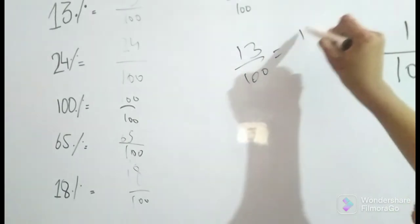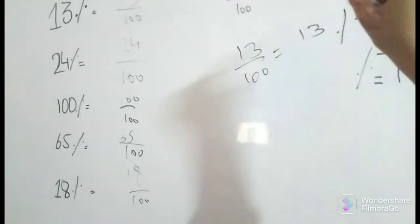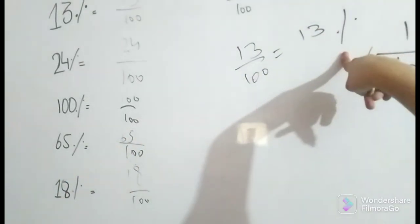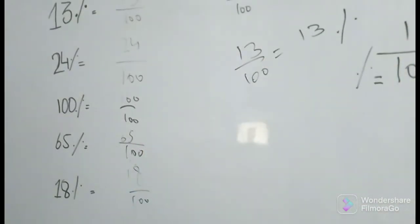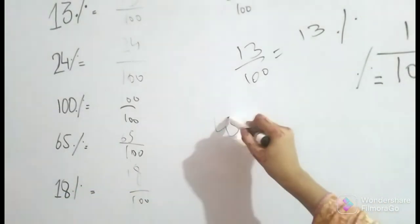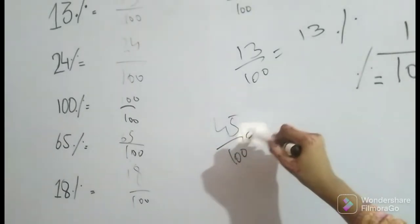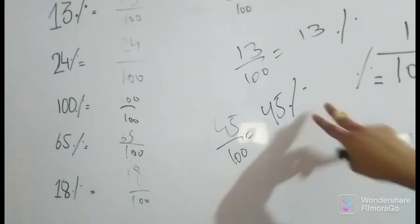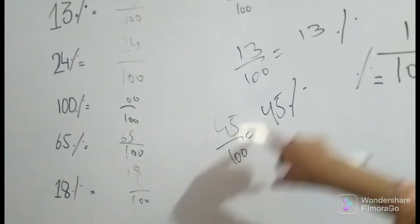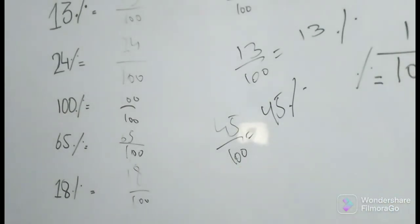13 over 100 is equal to 13%. Why? 100 is equal to the percent sign and 13 will stay the same. Likewise, if it is 18 over 100, we can convert this - 100 equals the percent sign, 18 will stay as it is. If it is 45 over 100, it equals 45%. The number will stay the same in every condition.